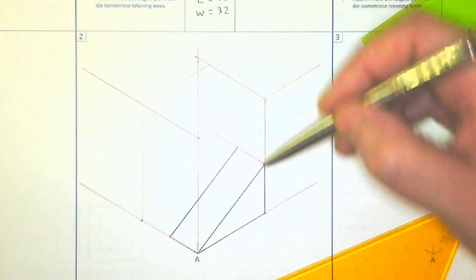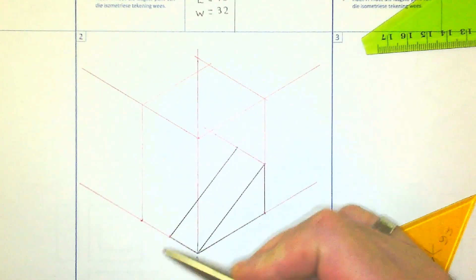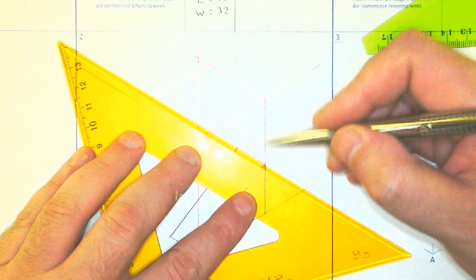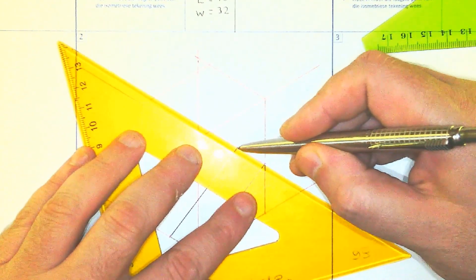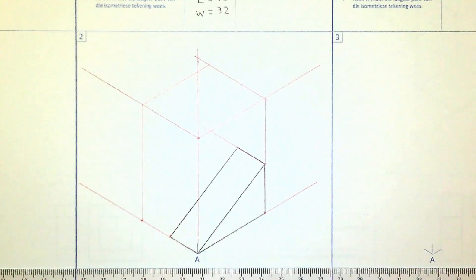So there you can actually see the thickness. Alternatively, what you could have done, you could have measured 16 there as well and then you just could have connected it. Either way, as long as you get the proper result. Now we have our prism.